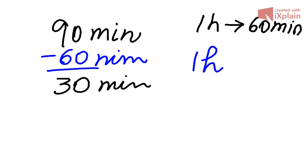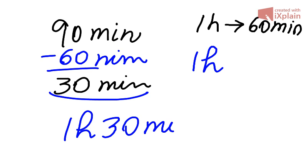So 90 minutes, if I take one full lot of 60 minutes, that means one hour. And then we still have left these 30 minutes. So final answer, one hour and 30 minutes.